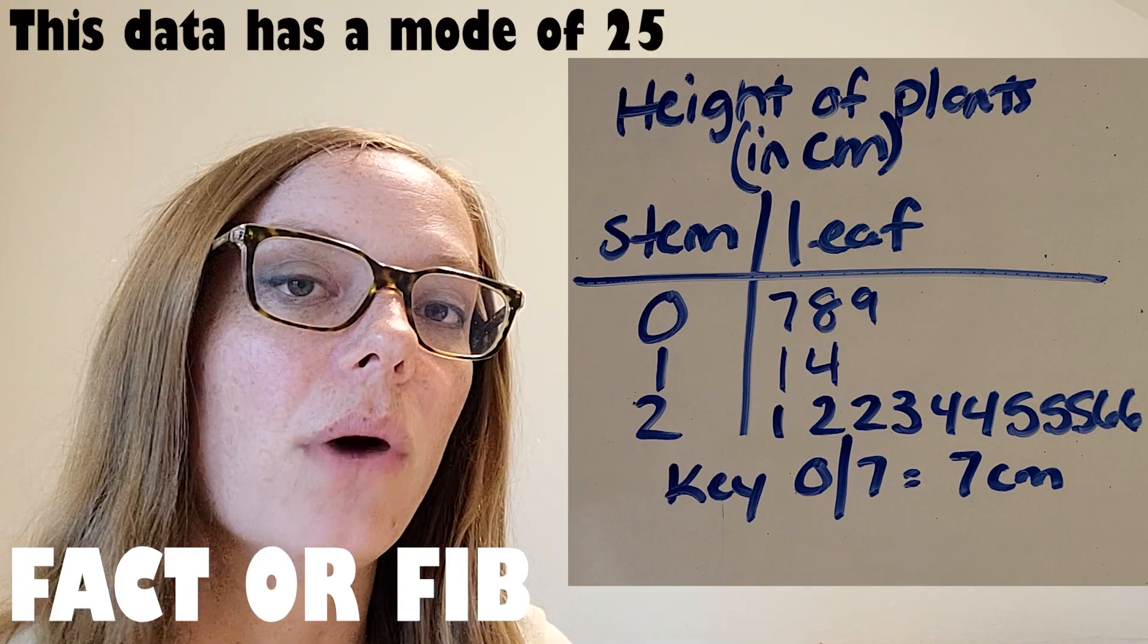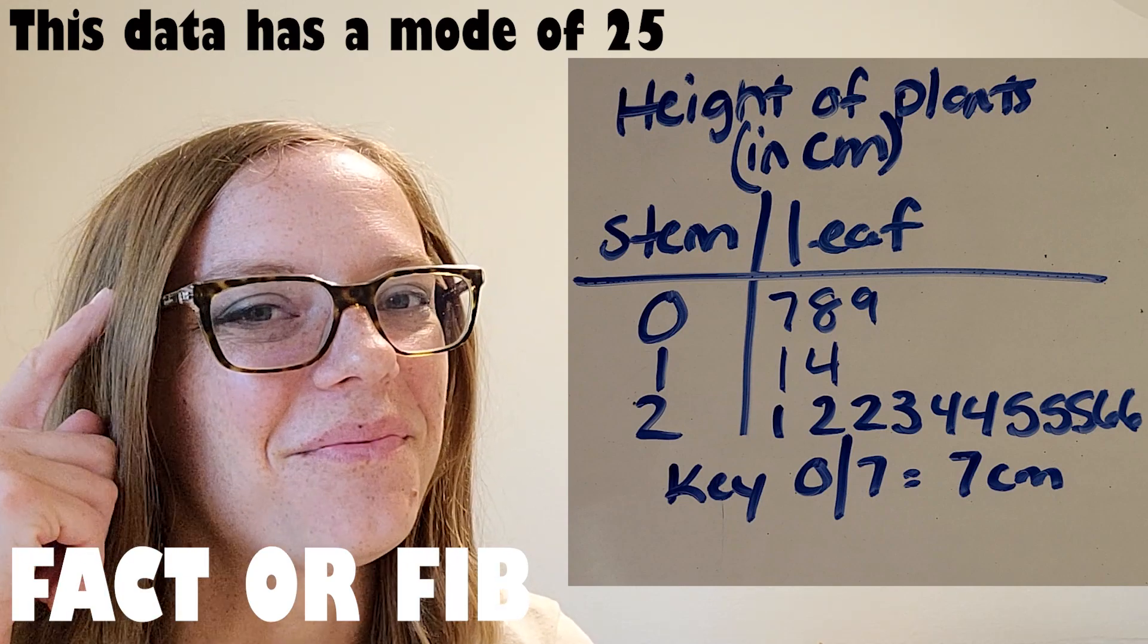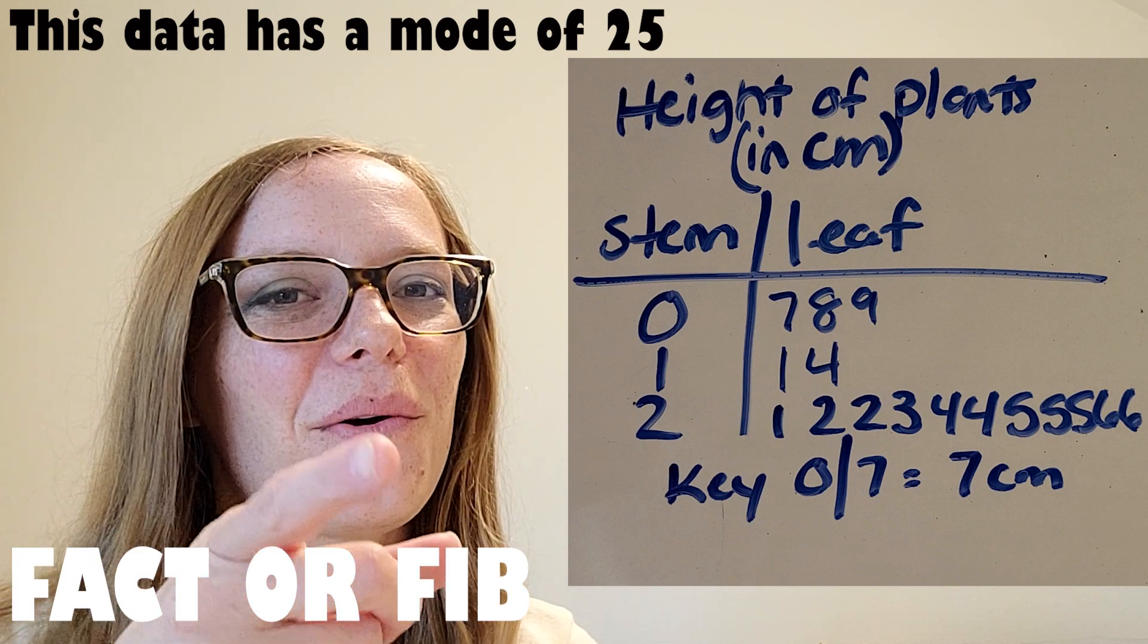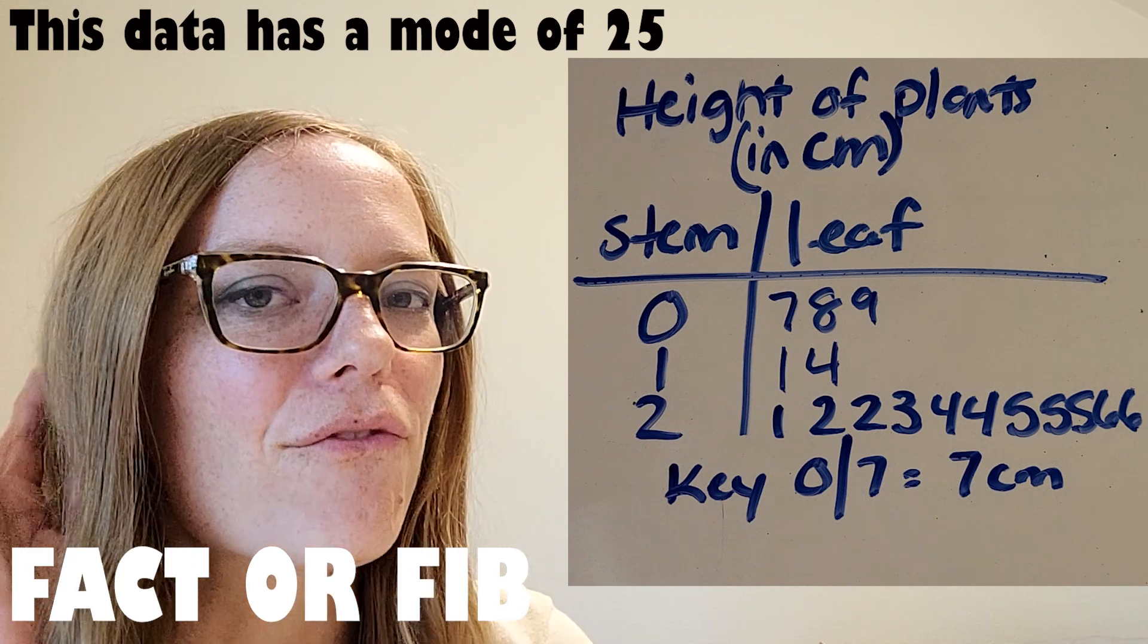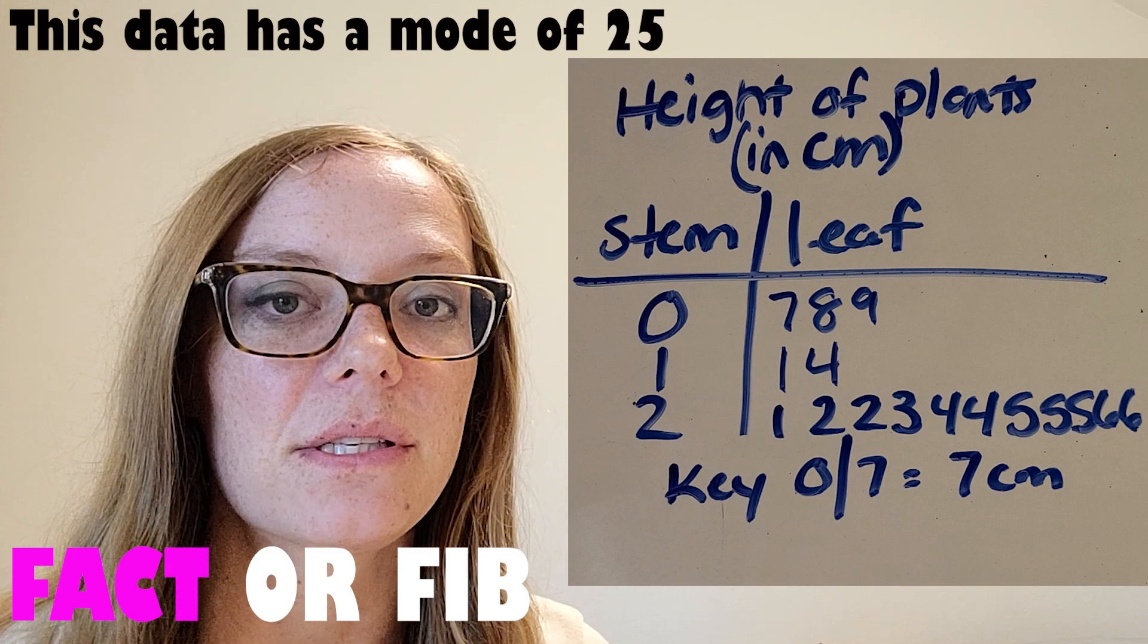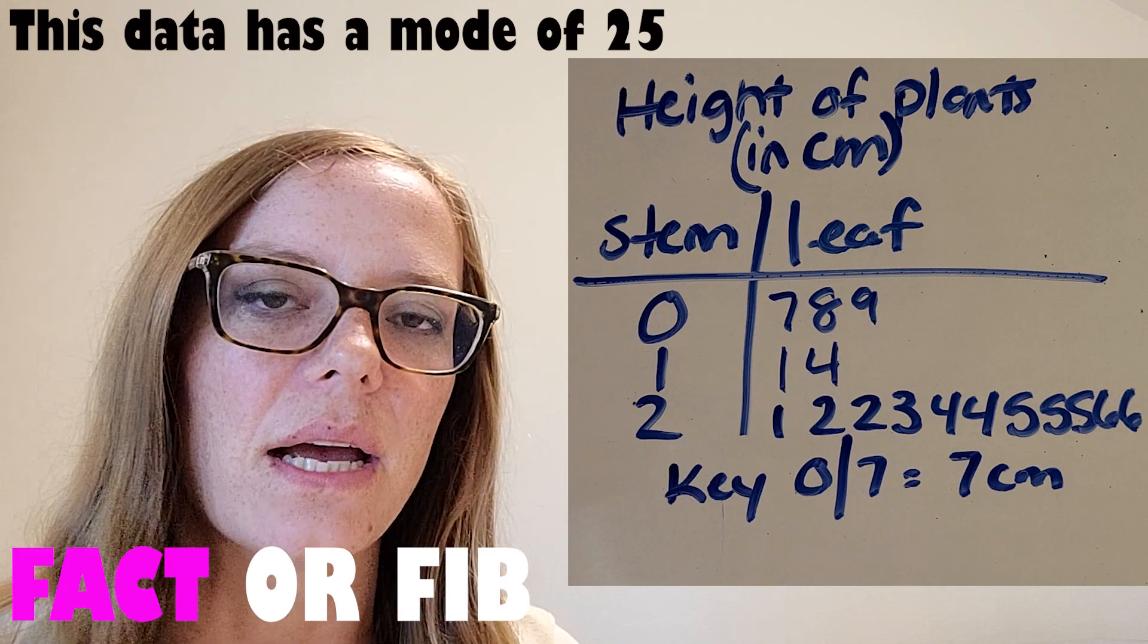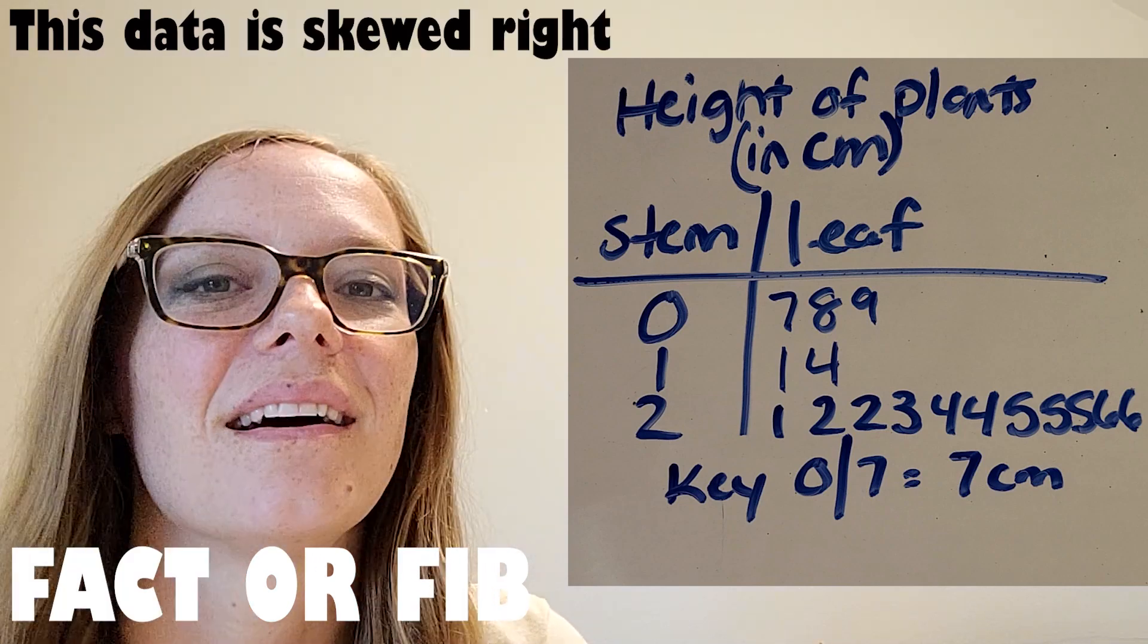This data has a mode of 25. Think about it. All right, one, two, three, go. I am hearing fact. Because I see three different five leaves on the two stem. And the other numbers that happen more than once, they happen twice, not three times. So 25 is the mode or most.